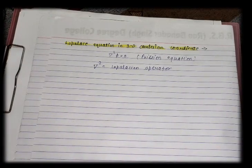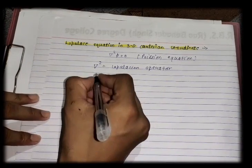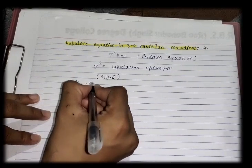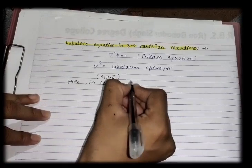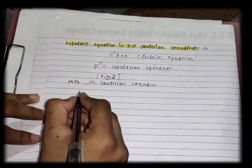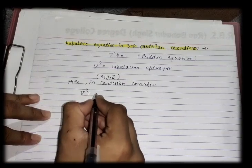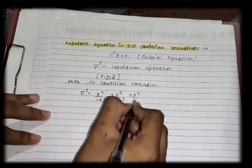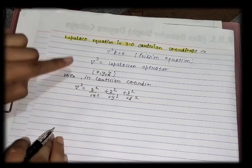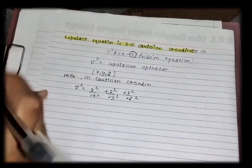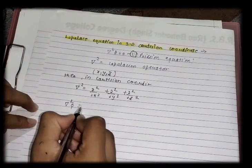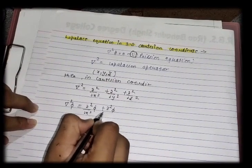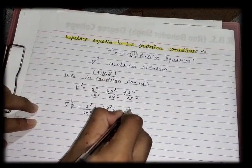In Cartesian coordinates, the three axes are x, y, and z. The Laplacian operator del-squared is written as the sum of second partial derivatives: ∂²/∂x² + ∂²/∂y² + ∂²/∂z². Operating this on phi gives del-squared phi equals ∂²phi/∂x² + ∂²phi/∂y² + ∂²phi/∂z².